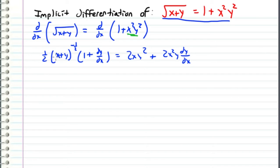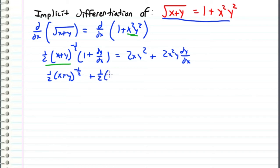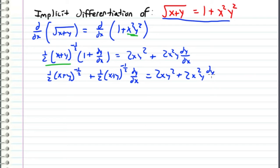Now we're going to distribute this quantity so that we can separate the constant term and the dy/dx term. When we do that, we get one-half times (x plus y) to the negative one-half times one, plus one-half times (x plus y) to the negative one-half times dy/dx, and this equals 2xy² plus 2x²y dy/dx.